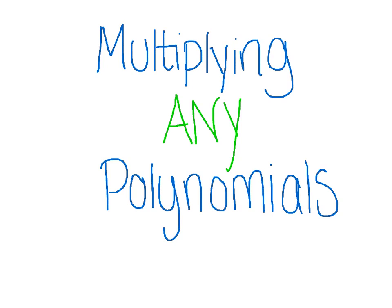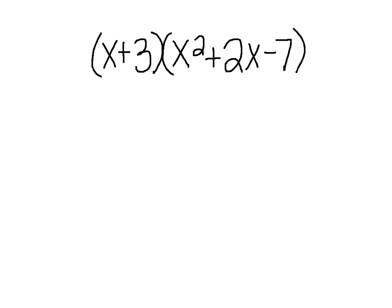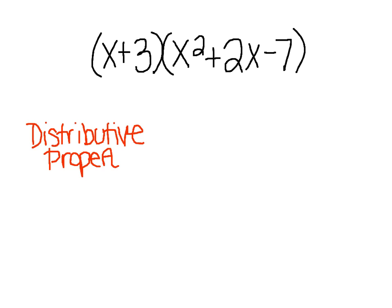We're going to do one example of each so you can see it's the same idea, just set up a little differently. It's the same concept as the distributive property with two binomials, but it's a little bit more work. You have to be very careful about simplifying and combining like terms, and making sure that you have all the right signs.